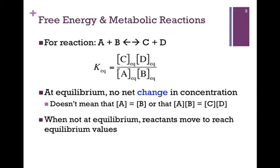In this case, you'll notice there's a subscript EQ associated with each of these values. So we're measuring the concentrations of reactants and products at equilibrium. So there's no net change in concentration. The system is at equilibrium. Keep in mind, this does not mean that the concentrations of A and B are equal, or that the concentrations of products and reactants are equal. It simply means that there's no net change in concentration. When the system is not at equilibrium, the reactants will move to reach those equilibrium values.